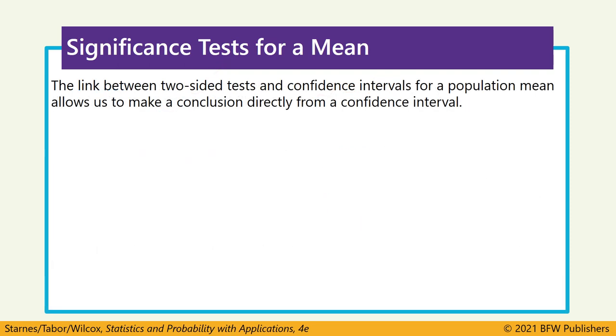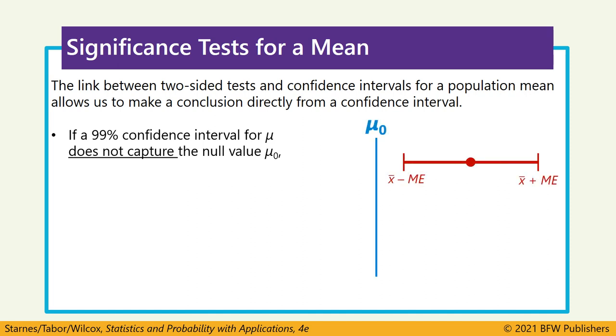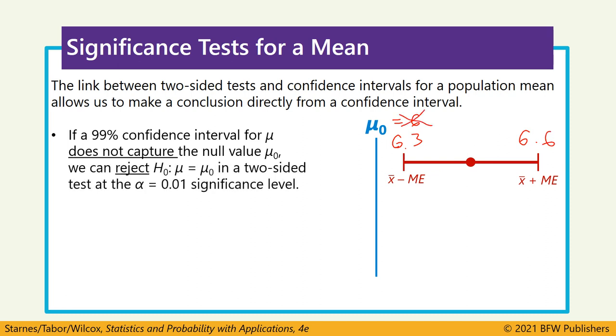Now, while this chapter is on hypothesis tests, we can use confidence intervals to evaluate claims as well. Let's say we had a 99% confidence interval for mu. And when we make the boundaries of that interval, it doesn't include that null hypothesis value. So in this case, let's say that the subs are actually a little over 6 inches. If 6 inches isn't in the interval, maybe it goes from 6.3 to 6.6. Since that value is not in the interval, we would be able to reject a null hypothesis at a 1% significance level. That 1% comes from whatever is left over from the confidence level.